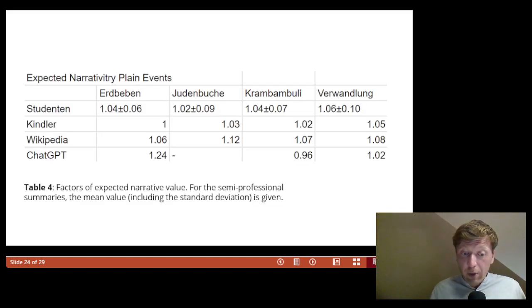we calculated the narrativity value of the passages referenced in the summaries. We related this to the expected total score, given the length of the text passages included in the summary. Thus, on average, a value of 1.0 results when the passages are randomly selected.